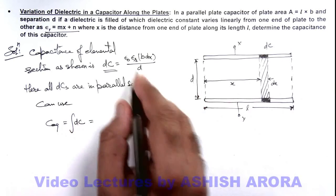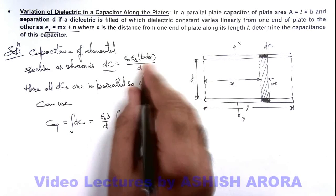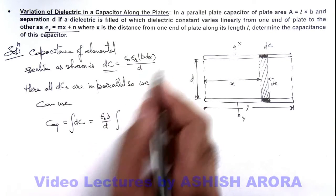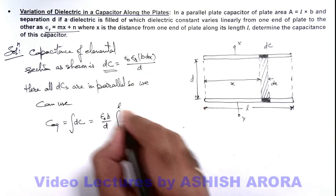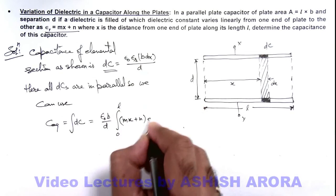So here it is ε₀b/d is a constant for dc, and this εr we can integrate from zero to l, that is (mx + n)dx.